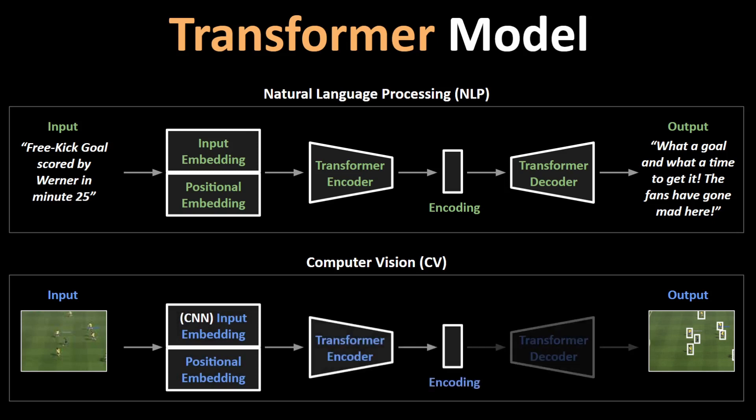These are then fed to a transformer encoder followed by the decoder to give the desired output. In the case of this paper, the DETR model outputs bounding box information, which is useful for the task of object detection, showcasing the usefulness of transformers in computer vision tasks as well.